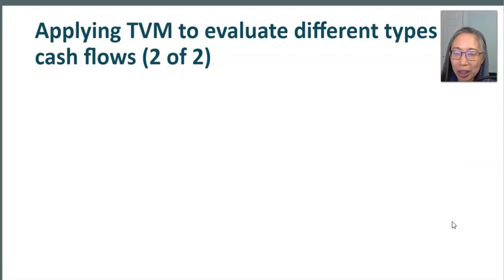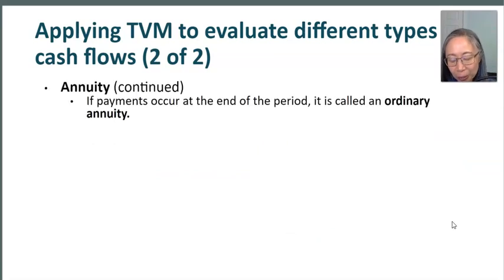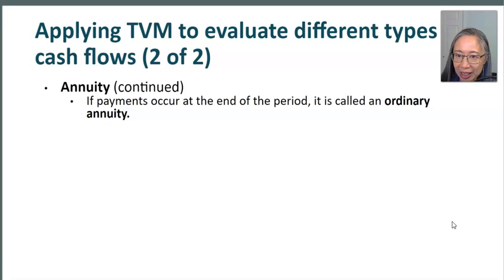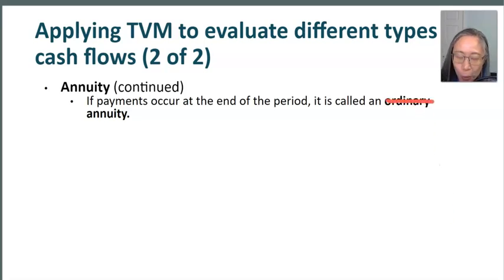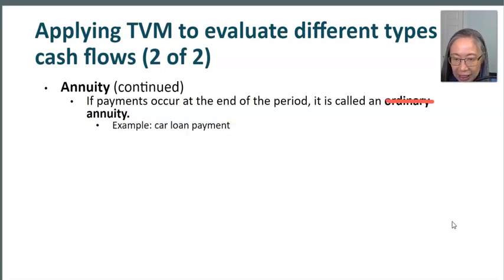There are two main types of annuities. If the payment happens at the end of each period, it is called an ordinary annuity. Because this is the most common type, unless otherwise qualified, if you just see the word 'annuity,' you can assume it to be ordinary. An example of an ordinary annuity is a car loan or mortgage payment — all those are due at the end of each month.